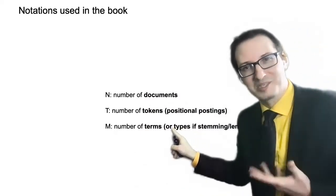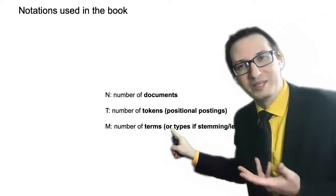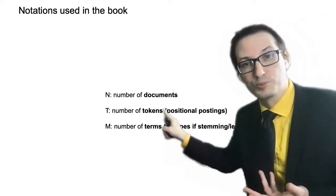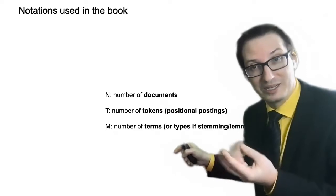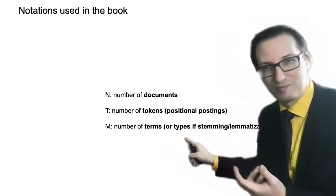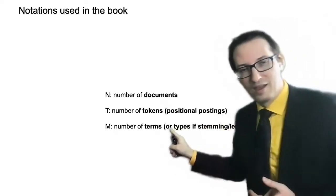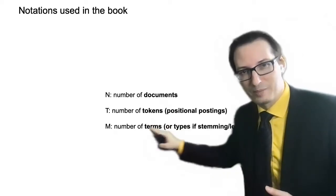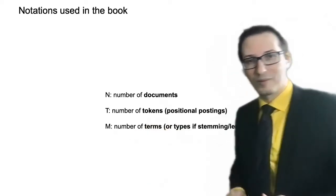M is the number of terms. Again, that's what you have on the left of your standard index. In the pre-processing, there is a fancy name for that that we also use called type. So the types are the groups of tokens that are basically conjugations of the same verb and so on. But in the index, we don't call them types. We just use the word term or what we have on the left.